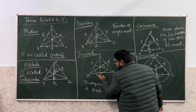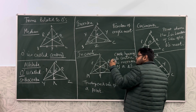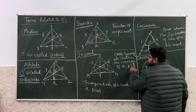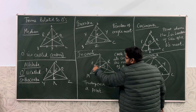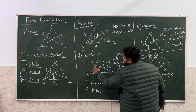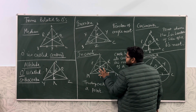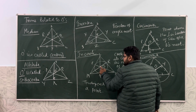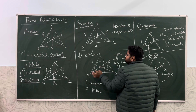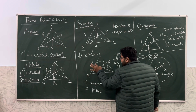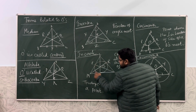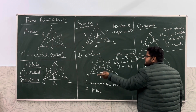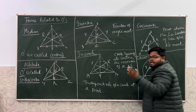Now we have something called the incircle. The incircle is a circle having the same centre as the incenter. The incenter was the point where all the internal angle bisectors meet. I am going to draw a circle whose centre is the incenter of the triangle. This circle touches all three sides of the triangle at points P, Q, and R. Keep in mind: incenter, incircle — the circle is inside the triangle.